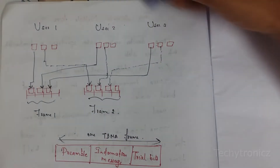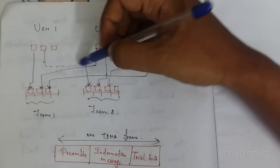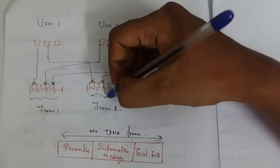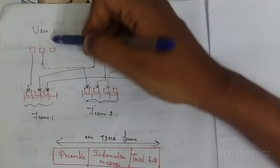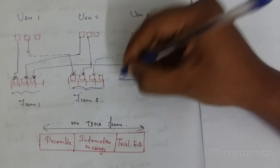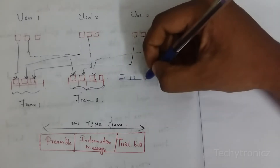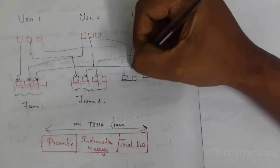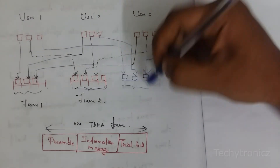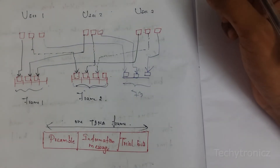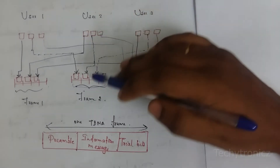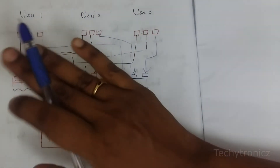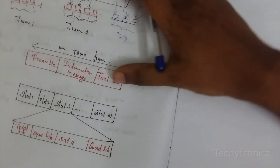The cycle then repeats: in the next frame, User 1 again uses a time slot, User 2 uses the next time slot, and User 3 uses the third time slot — that is Frame 2. Then the cycle repeats for Frame 3 and so on. Each user gets one time slot per frame, and transmission happens only during that assigned slot. This is the frame structure of Time Division Multiple Access.